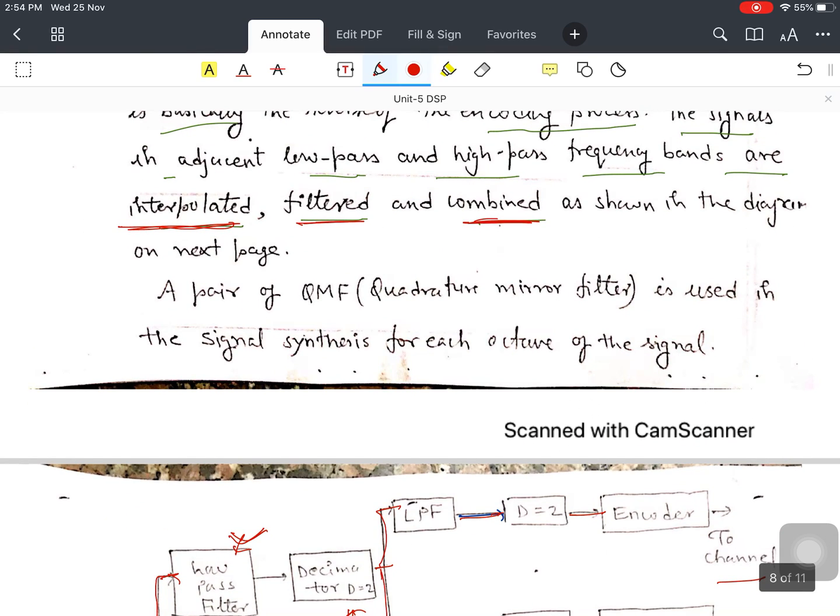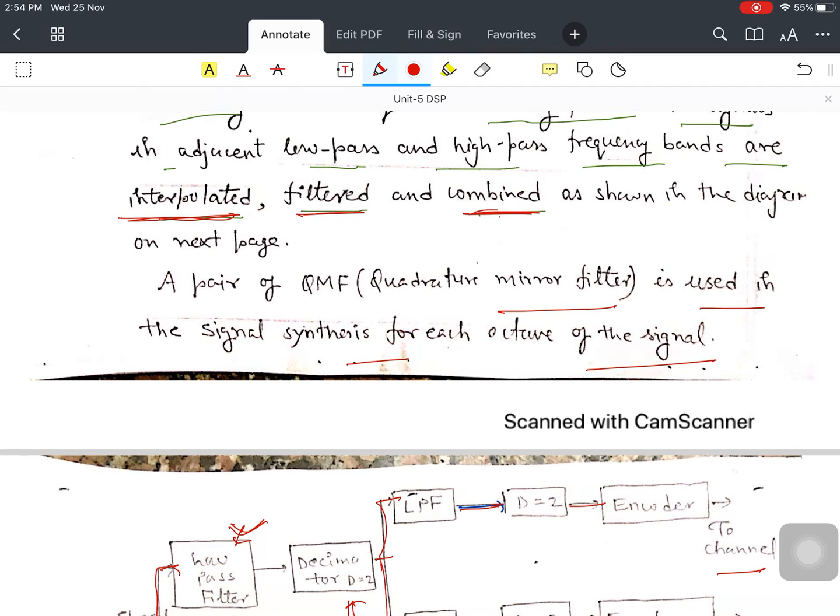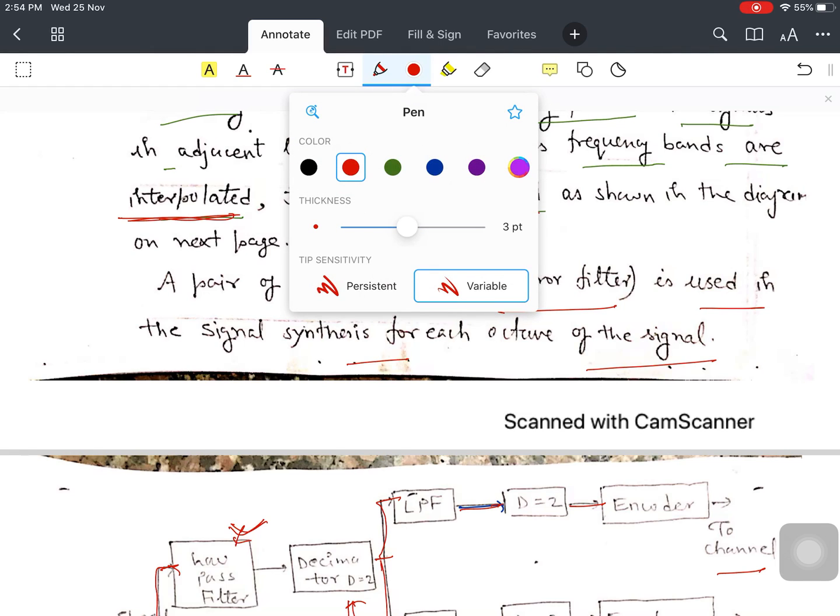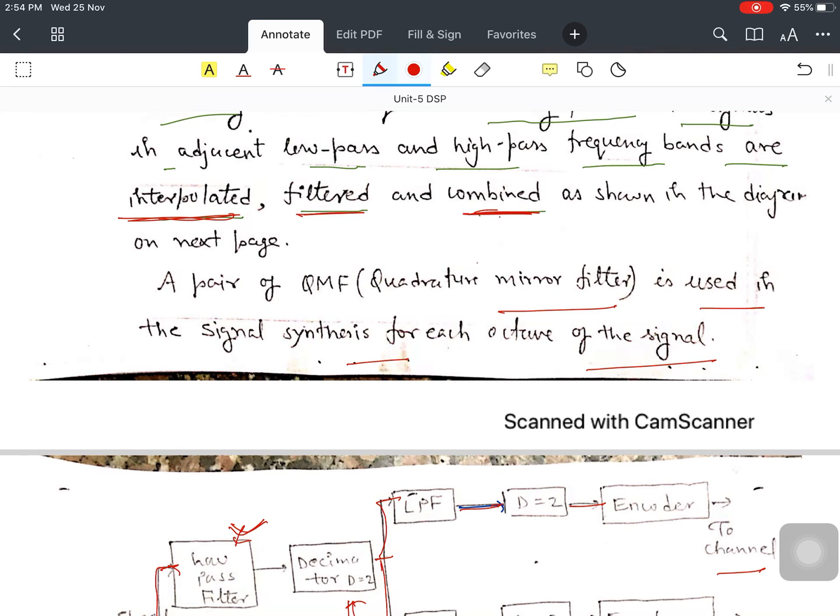A pair of quadrature mirror filters is used in the signal synthesis for each octave of the signal. This is your diagram.